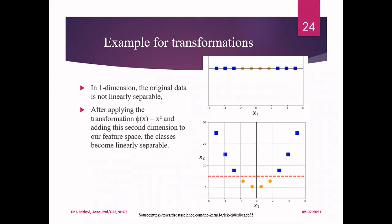What I can do now is convert from the lower dimension into a higher dimension. Here the dimension is 1, so I will be converting from dimension 1 to 2D — the next higher dimension. To do that, I need to apply some mathematical function, which is nothing but the kernel. In one dimension, the original data is not linearly separable. So we are going to apply a mathematical transformation. Let me assume that the transformation is written as φ(x), represented as x squared. This is the mathematical function we are going to apply.